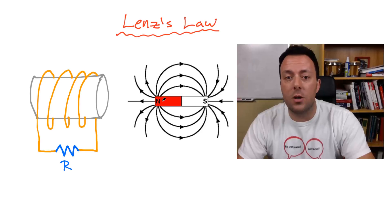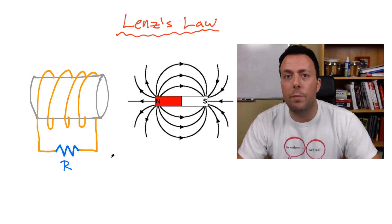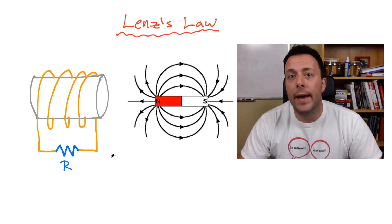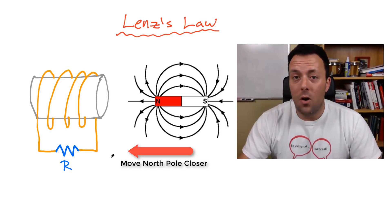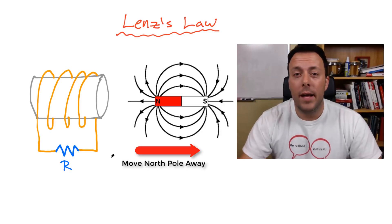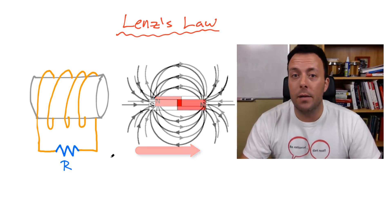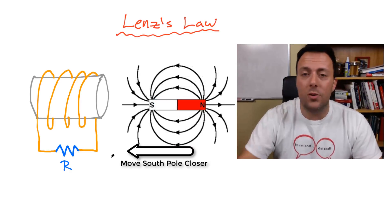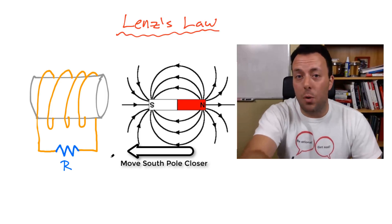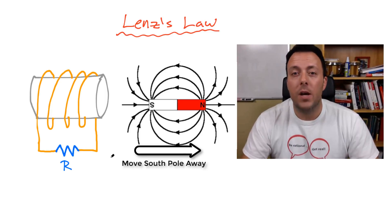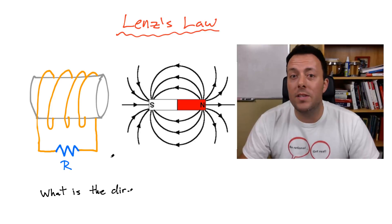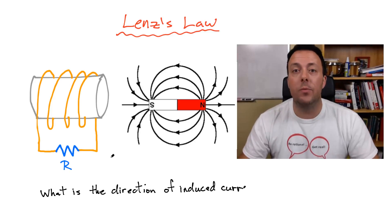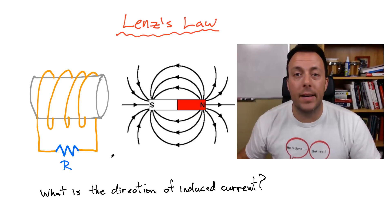I'm going to do a couple of things. I'm going to move the magnet closer to the coil or move it away from the coil, and I can also flip it around. I can push the south pole into the coil or push the south pole away from the coil. Let's look at all four of those cases and figure out what is the direction of the current induced in this coil.